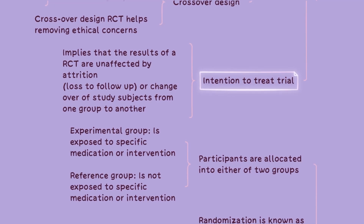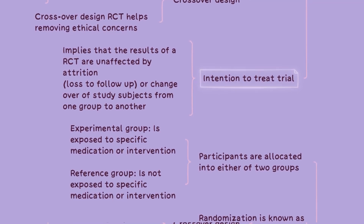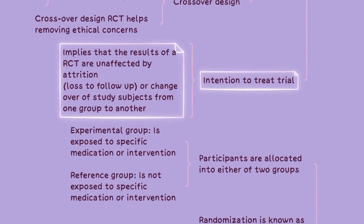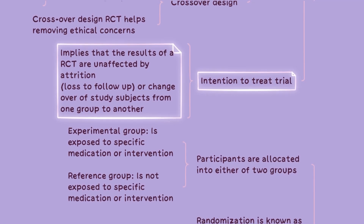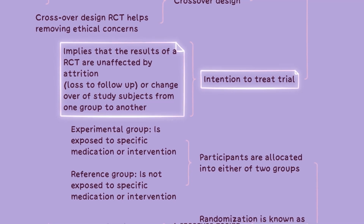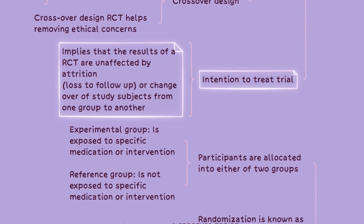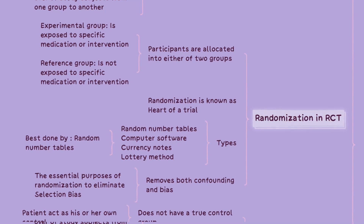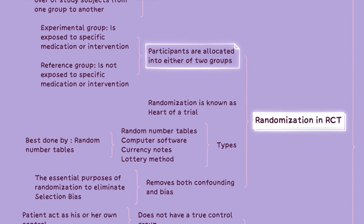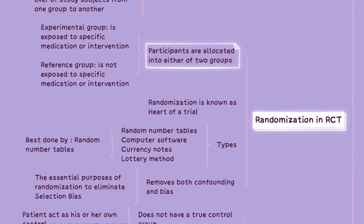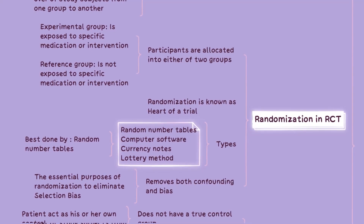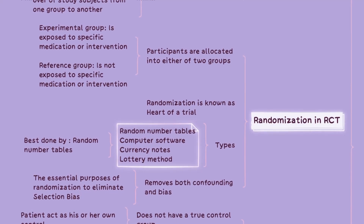An important part of randomized controlled trials is the intention-to-treat principle. This concept implies that the results of an RCT are analyzed based on the initial treatment group assignment, regardless of attrition or changes in study subjects from one group to another. It helps maintain the integrity of the randomized design. Randomization is a crucial component of RCTs — it involves allocating participants randomly to either the experimental or reference group, removing both confounding and bias. It is commonly performed using random number tables, computer software, currency notes, or lottery methods.